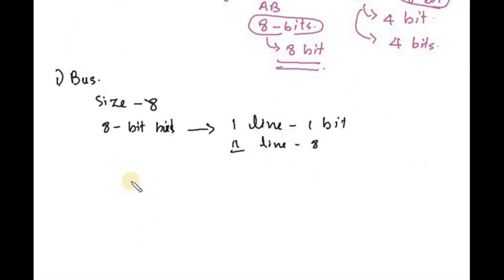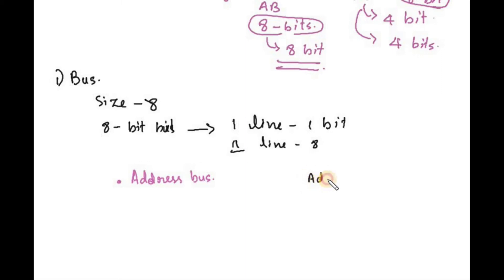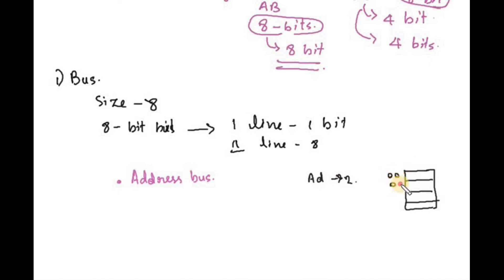Now let's check the address bus first. The address bus size determines the maximum memory. For example, if the address bus size is 3 bits, the maximum memory locations would be 2 raised to the power of 3, which is 8.